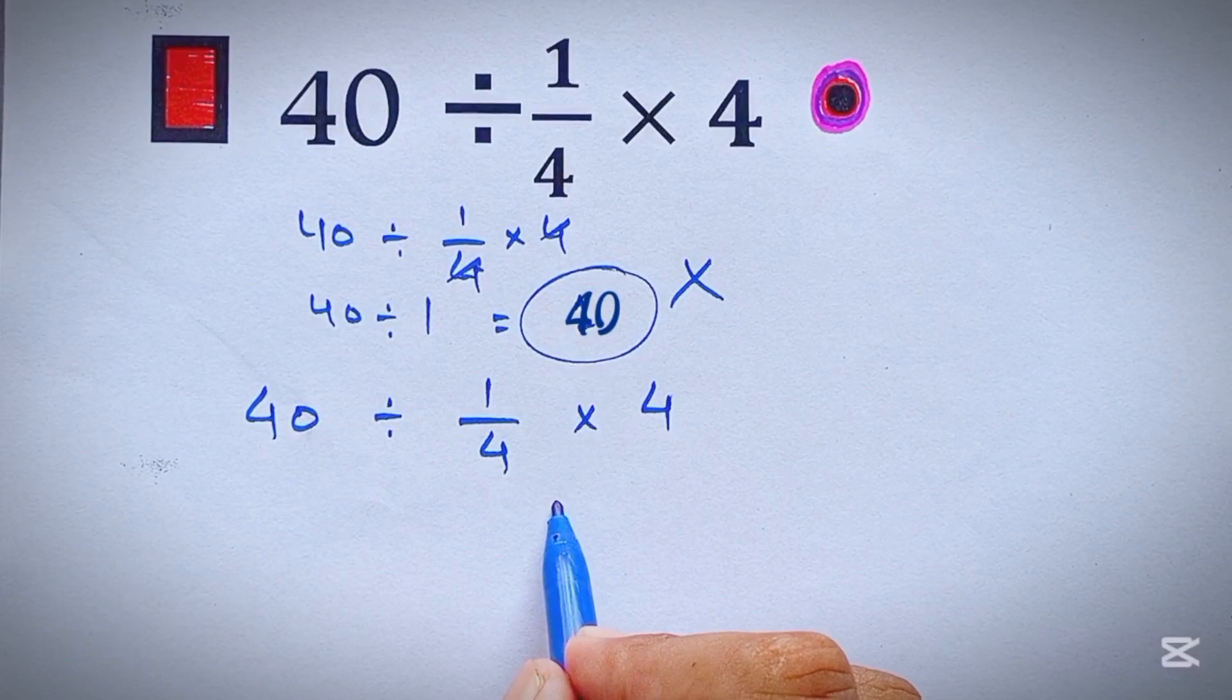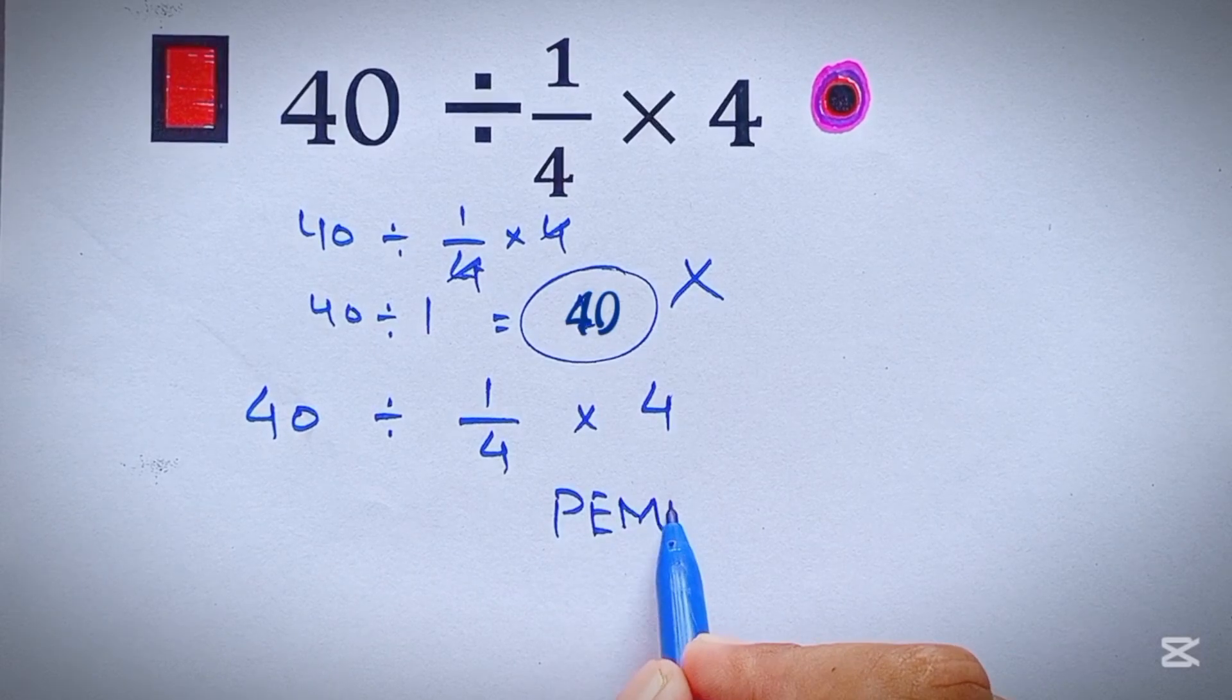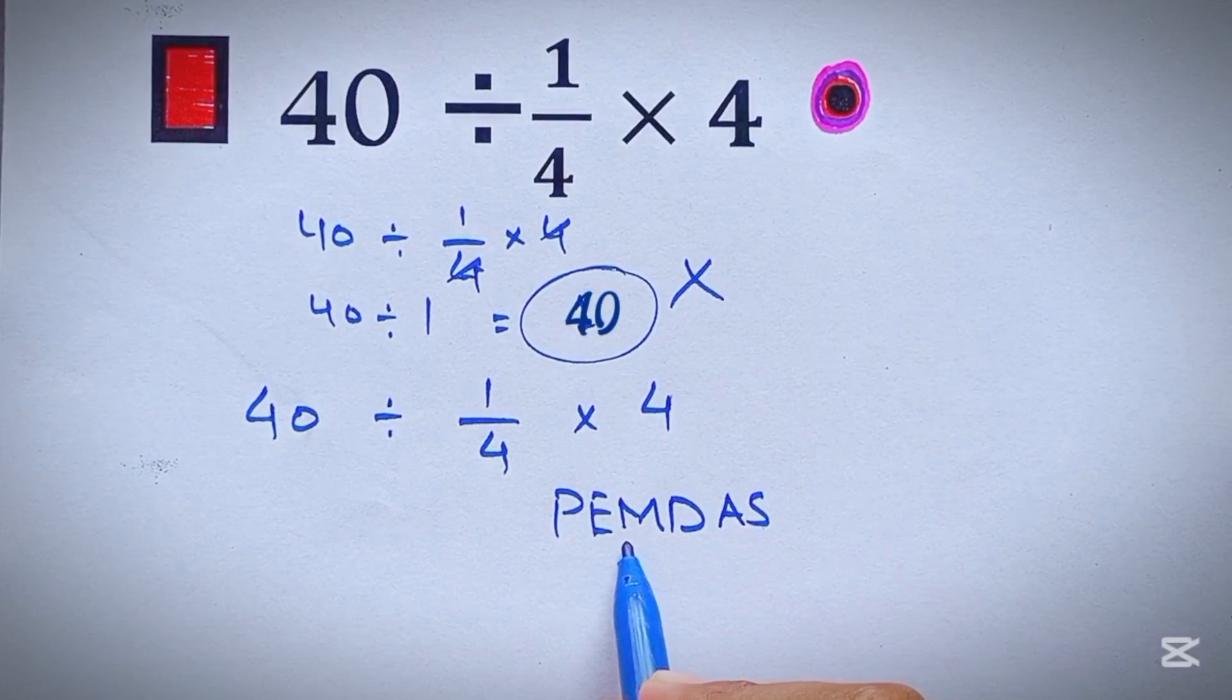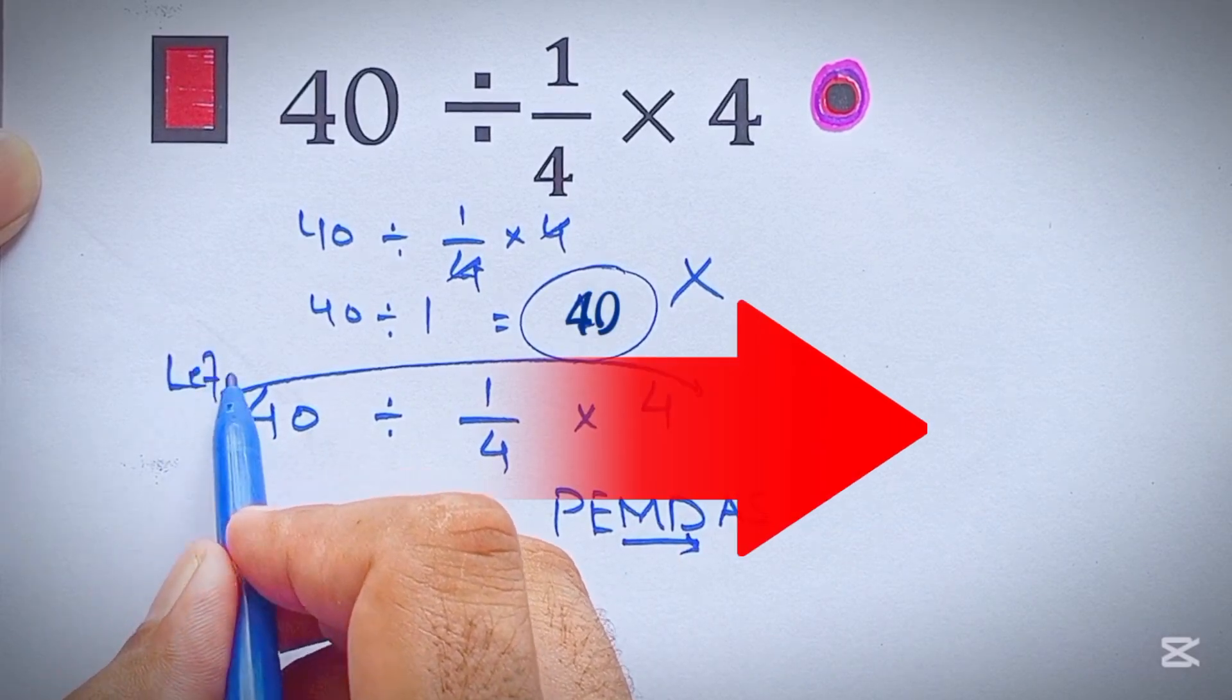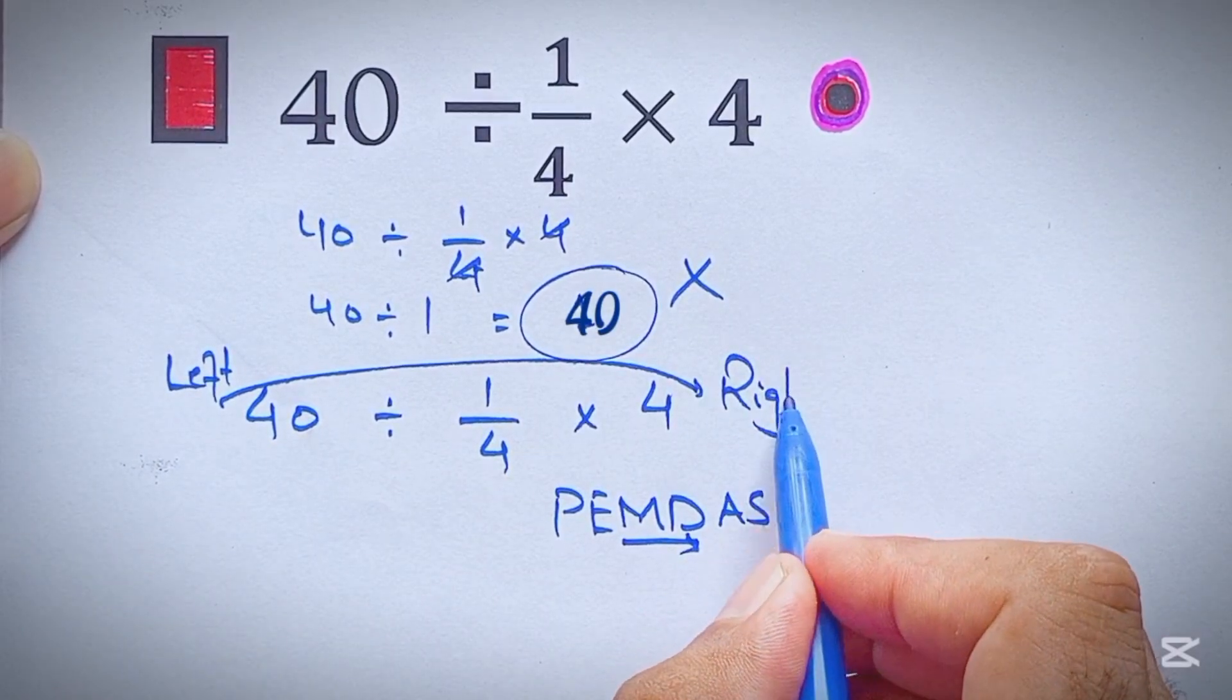As we know, according to the order of operations, which is PEMDAS, multiplication and division have equal priority, and we have to start from left to right: 40 divided by 1 over 4.